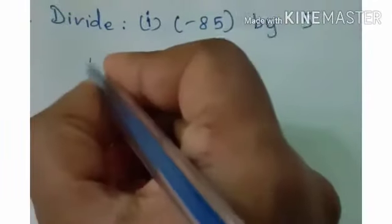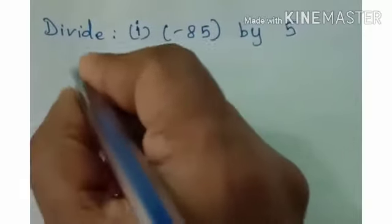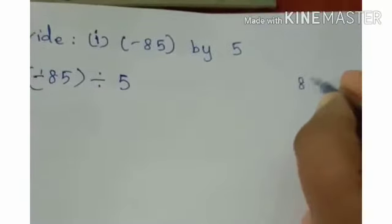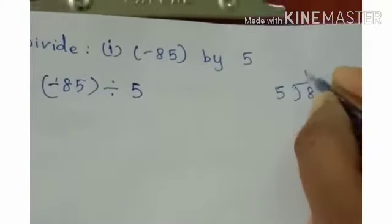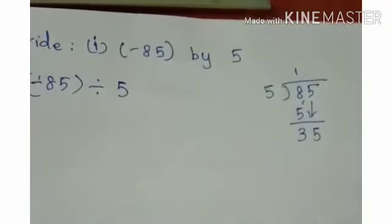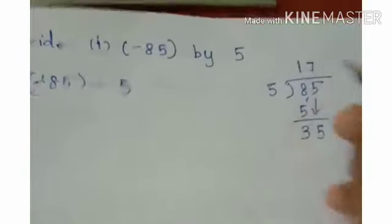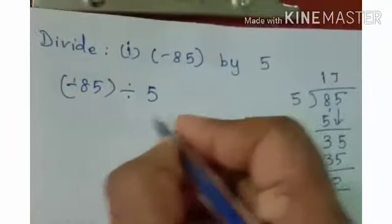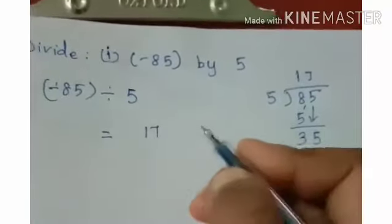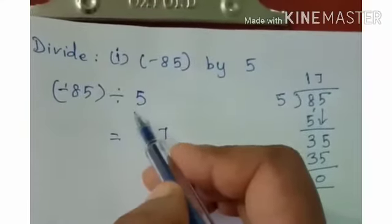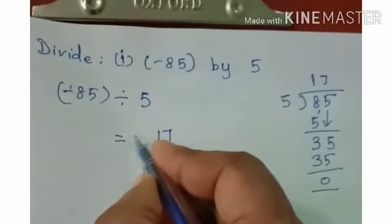Now let us see how to divide integers using these rules. Divide minus 85 by 5. This can be written as minus 85 divided by 5. We know how to divide 85 by 5: we get the answer as 17. Since we are dividing two integers with different signs, the answer carries the negative sign, giving minus 17.